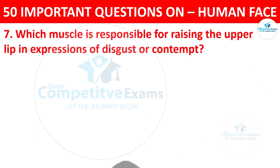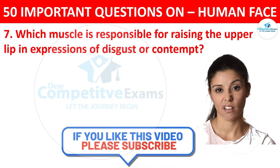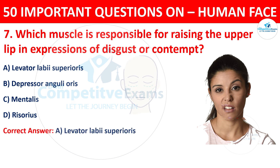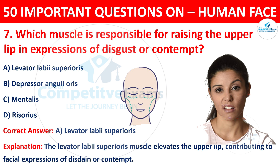Question number seven: which muscle is responsible for raising the upper lip in expressions of disgust or contempt? The options are levator labii superioris, depressor anguli oris, mentalis, or risorius. The correct answer is A, levator labii superioris. This muscle elevates the upper lip, contributing to facial expressions of disdain or contempt.